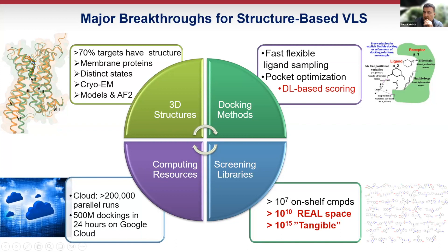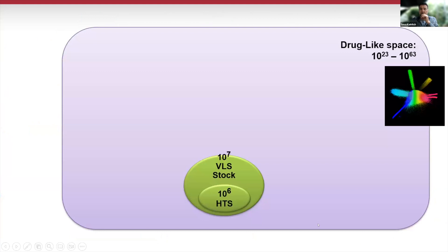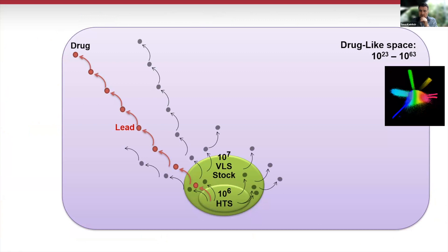In our case we mostly collaborate with Enamine and ChemSpace, and we're working on REAL space. What is the difference between screening a million compounds and billions of compounds? There is one reason that is probably underappreciated.